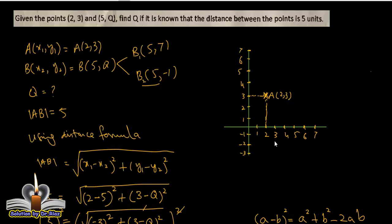So B₁ is (5, 7). The x coordinate is 5 and y coordinate is 7. So here is the point B₁ which is (5, 7).